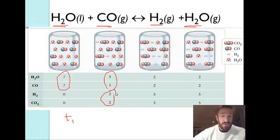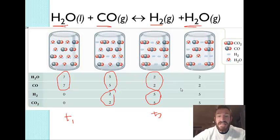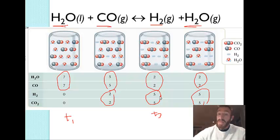Then we see it reaches a state where the reactants have decreased and we actually have some products. Notice the amounts are still changing. At time three, the reactants are at a concentration of 2 molar and the products are at 5 molar. At T4, those amounts have not changed — this indicates the system has reached equilibrium because the amounts of reactants and products are constant. Notice they are not equal — the products are at a bigger amount — but the amounts are constant, indicating equilibrium.